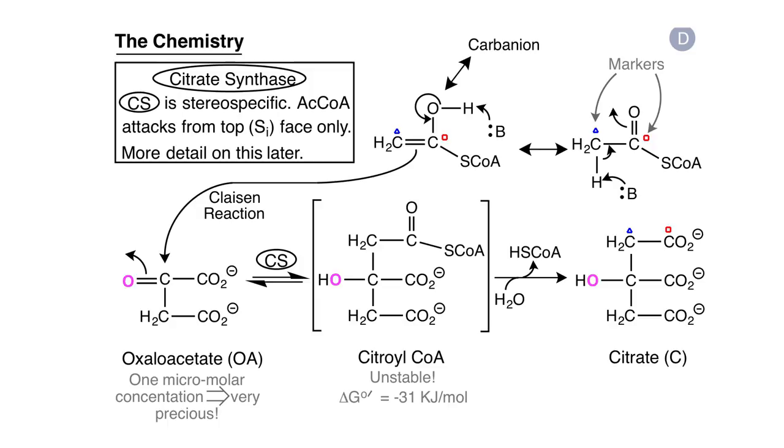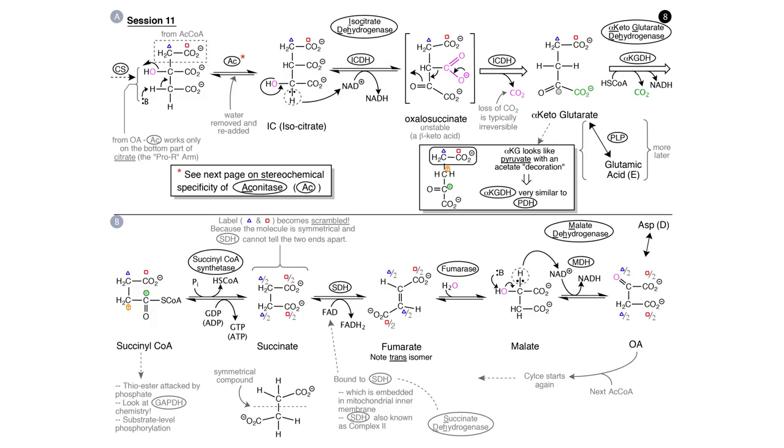Now we're going to look at panel D. Joanne explained why nature uses thioesters. The sulfur allows enolization stabilization of a carbanion at carbon 2, the carbon that's distal to the Coenzyme A functionality. The carbanion is then able to attack the number 2 carbon, carbonyl of oxaloacetate, in the reaction catalyzed by citrate synthase.